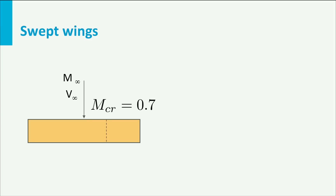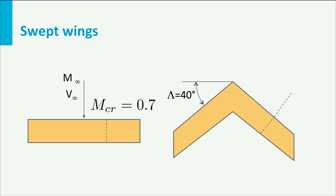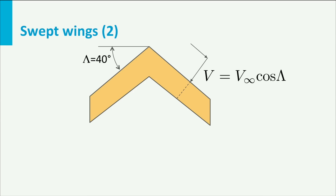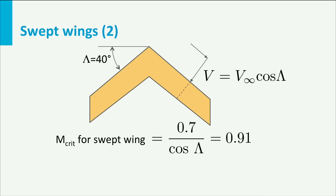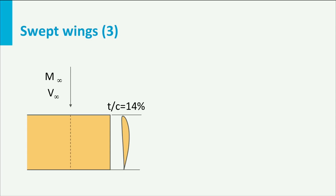Apart from using thin airfoils, another way to increase the drag divergence Mach number is wing sweep. Here you can see a straight wing with a certain airfoil giving a critical Mach number of 0.7. If we now sweep the wing — for instance with an angle lambda of 40 degrees — the speed that the wing sees is not the full velocity vector but a component V cosine lambda. This means that all velocities over the wing are reduced and consequently the critical Mach number is increased, in this case to 0.91.